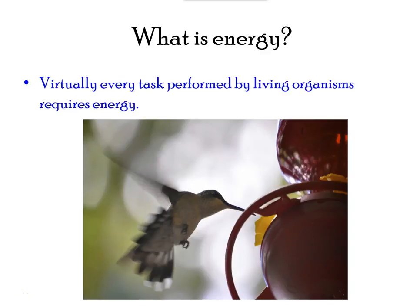How Cells Obtain Energy. As seen in the image here, a hummingbird needs energy to maintain prolonged flight. The bird obtains its energy from taking in food and transforming the energy contained in food molecules into forms of energy to power its flight through a series of biochemical reactions.